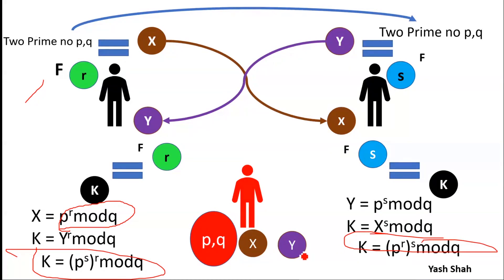Like we said in the analogy, the attacker cannot separate colors. Let us test it here. The attacker has the values of x, y, p, and q. From these four numbers, can the attacker generate r or s? What happens is: the attacker has x, p, and q, and all he needs to do is find the value of r. But by finding r from the modular equation, he gets multiple answers.